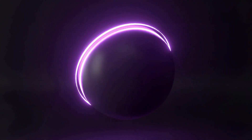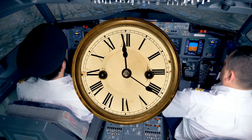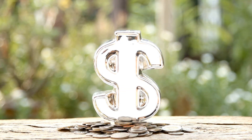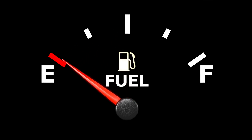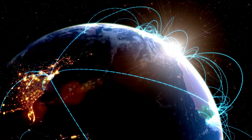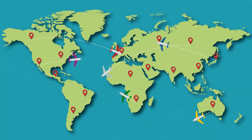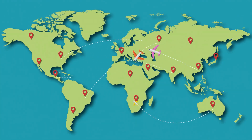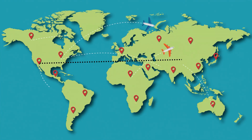Now that we understand why flight paths look curved on flat maps, let's talk about why airlines and pilots choose these routes. It comes down to efficiency — saving time, saving fuel, and reducing costs. Airplanes burn a tremendous amount of fuel. Every minute in the air has a cost, and over thousands of flights per day, that cost adds up to millions. The great circle route minimizes the distance traveled, and even shaving off a few hundred kilometers can mean thousands of dollars saved in fuel. For long-haul international flights, especially those that cross oceans or continents, the difference can be significant.